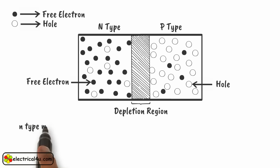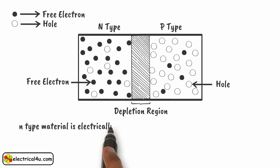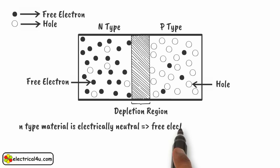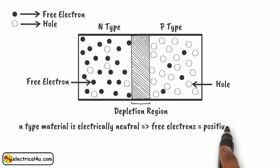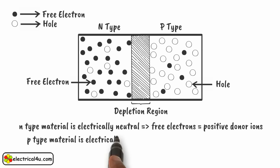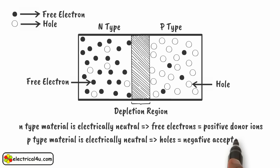We know that an N-type material is electrically neutral because the number of free electrons and positive donor ions are the same in an isolated N-type material. Similarly, a P-type material is electrically neutral because the number of holes and negative acceptor ions are the same in an isolated P-type material.